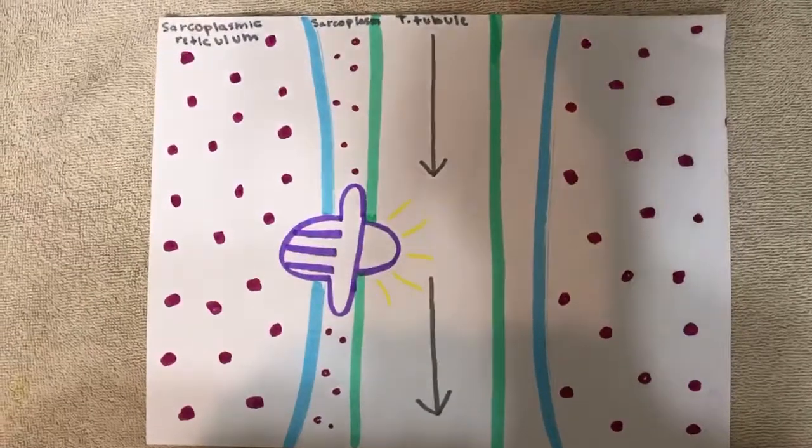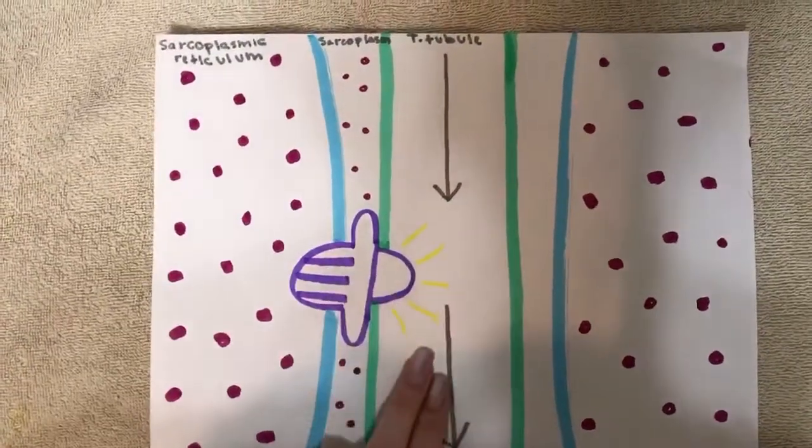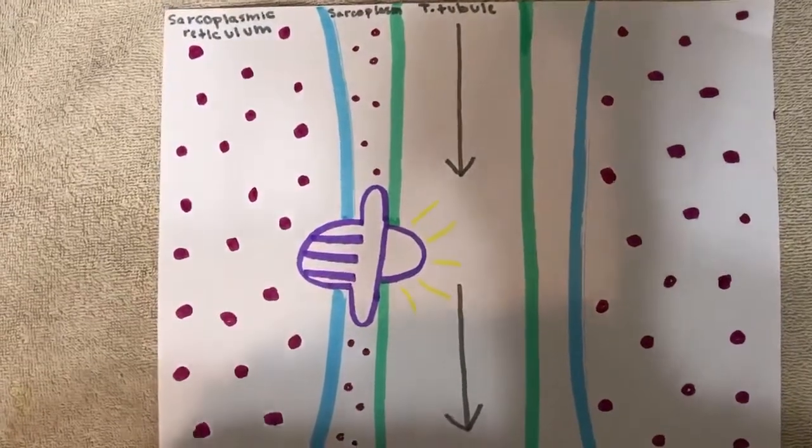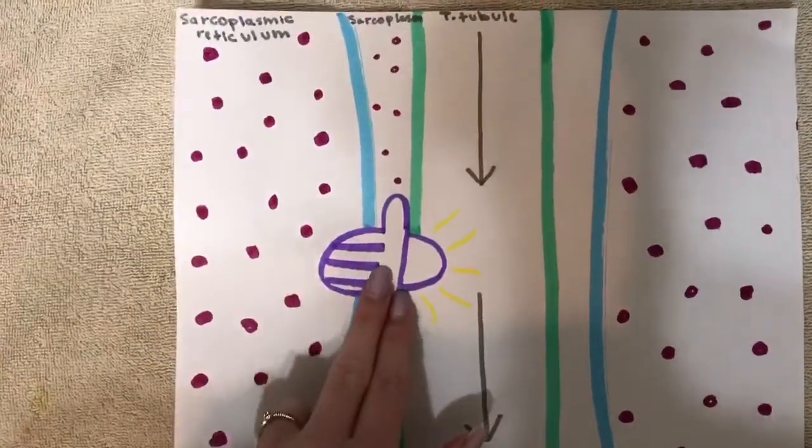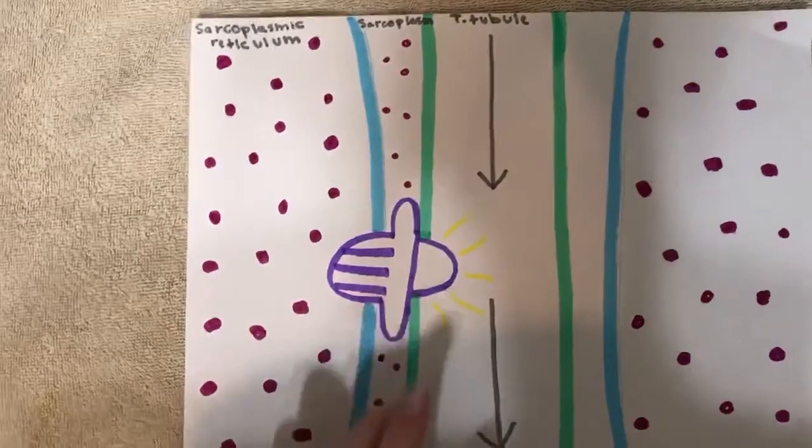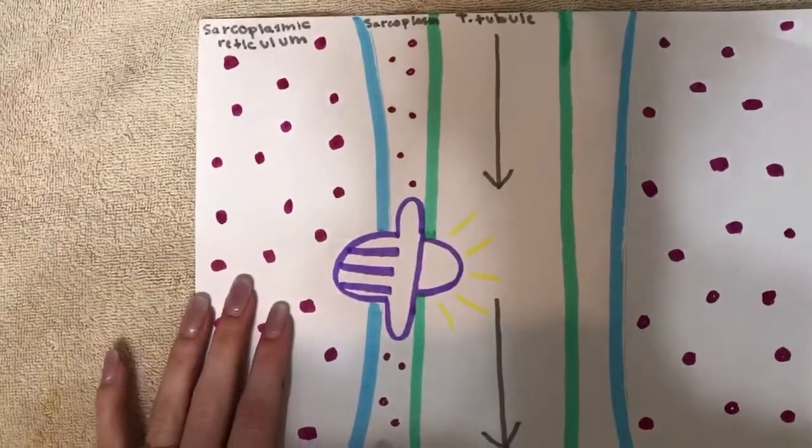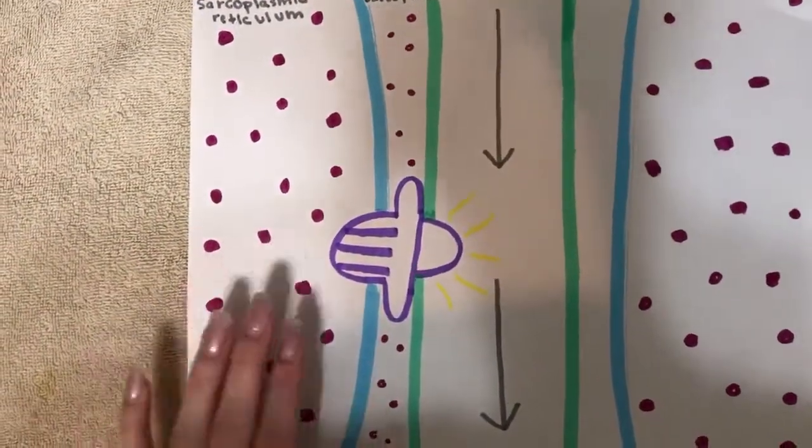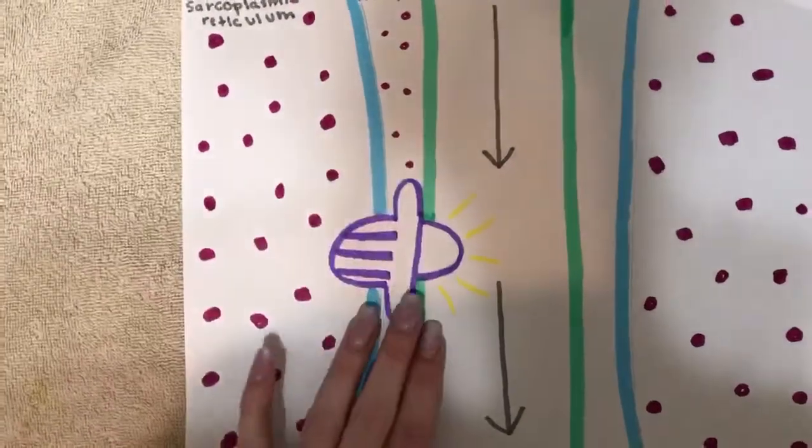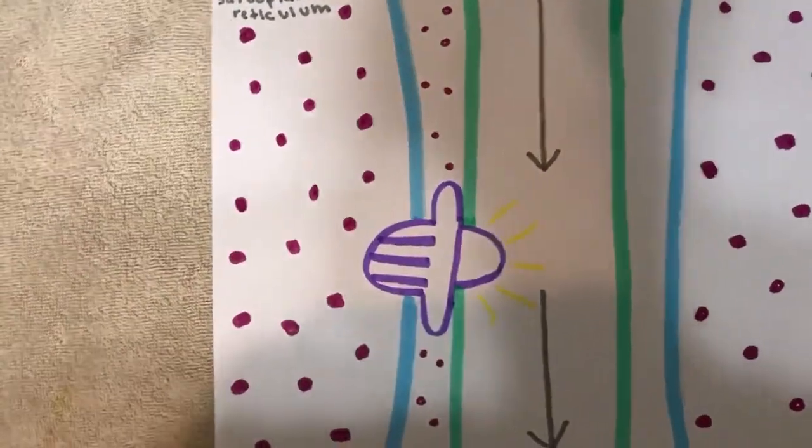Action potential will now move down the T-tubules, which causes the protein connector right here to change shape, which allows for the calcium to be released from the sarcoplasmic reticulum, and it will go into the sarcoplasm through voltage-gated channels.